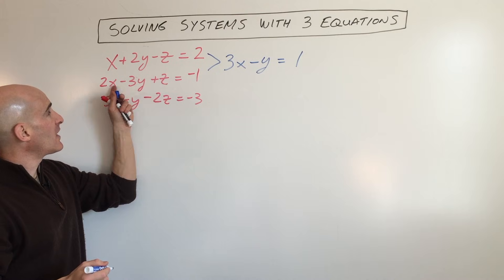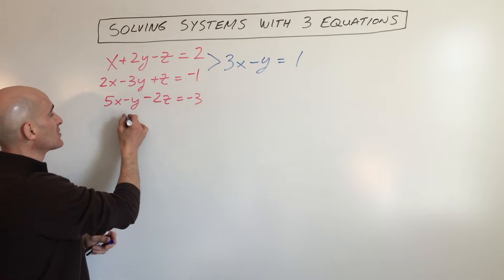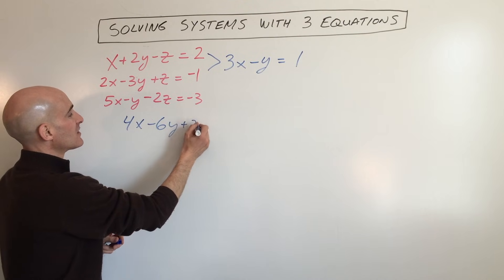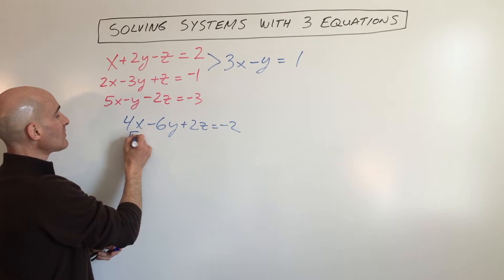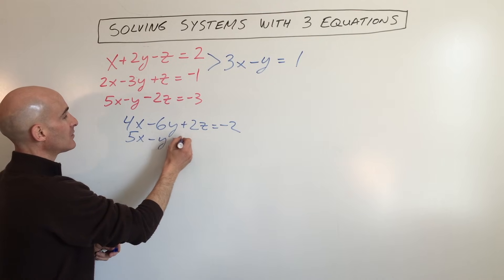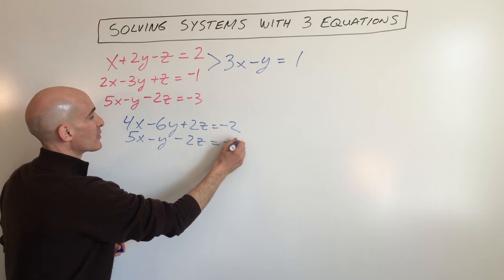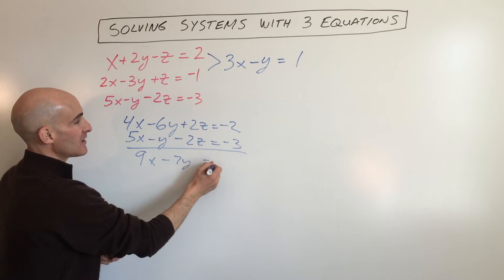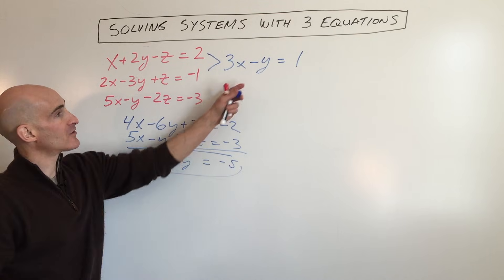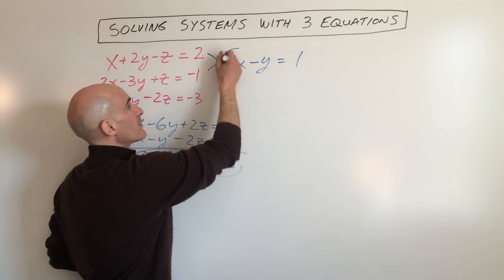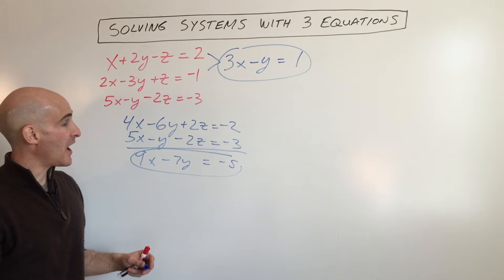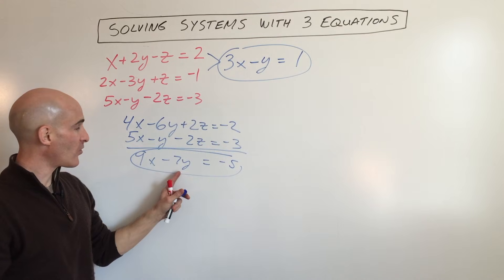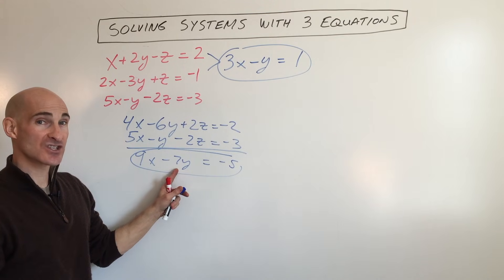What I'm going to do here is multiply this middle equation times 2. So that's going to give us 4x minus 6y plus 2z equals negative 2. The third equation I'm just going to bring down, and we're going to add these two together. So we get 9x minus 7y equals negative 5. Now we're down to two equations with two variables, just x's and y's. So let's multiply this equation by negative 7 so we get a positive 7y, and we can add it to eliminate the y's.